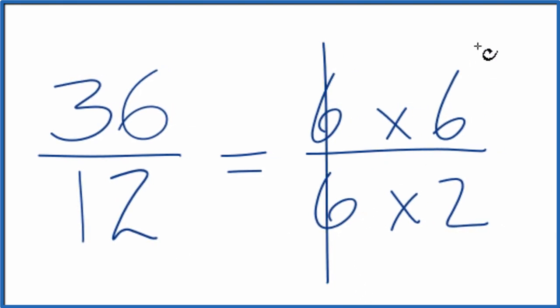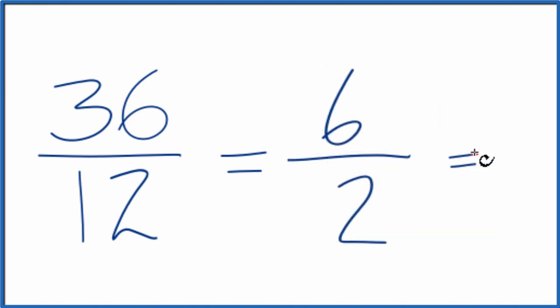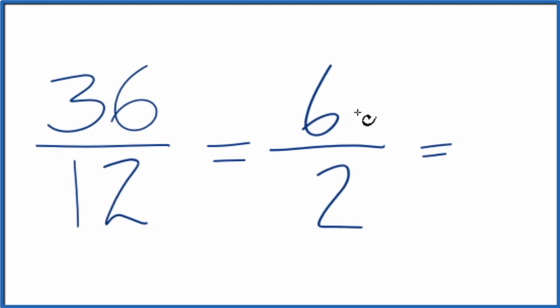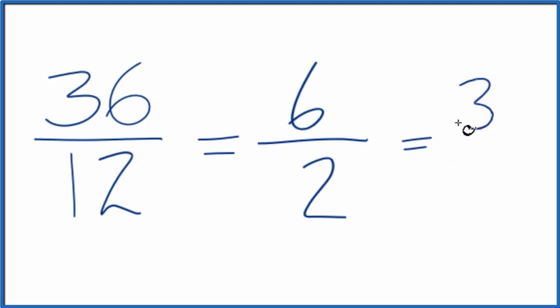Since it's on the top and bottom, we have 6 over 2. We can reduce this further because 2 goes into 6 evenly. Six divided by 2 is 3, and 2 divided by 2 is 1. Again, 3 over 1 is the same as 3, so we get the same answer.